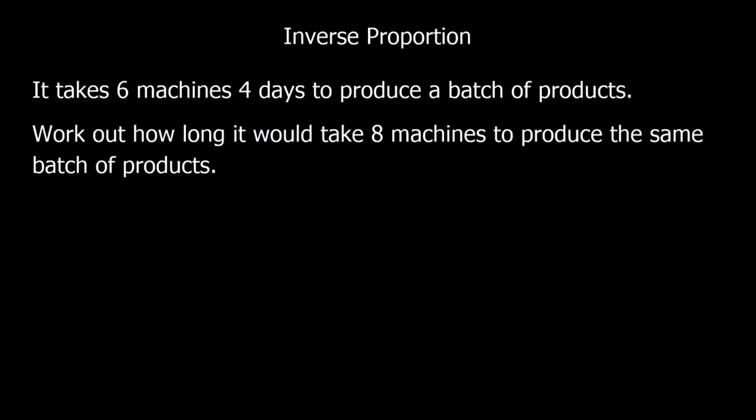Here we've got machines, how many machines we've got working, and how long it takes them to produce some products. If we double the number of machines, we're going to half how long it takes them to produce the products. That's inversely proportional.